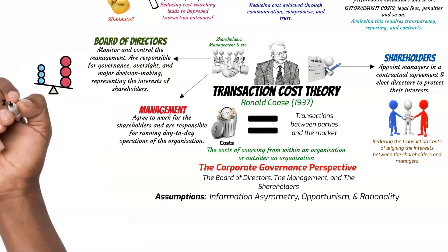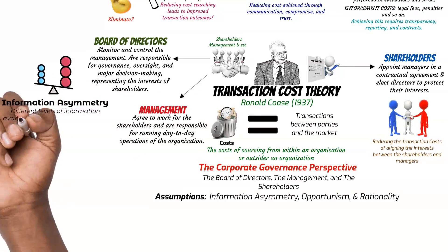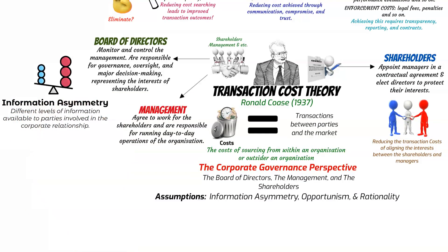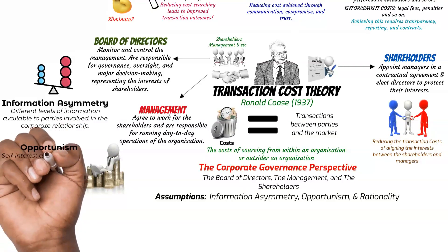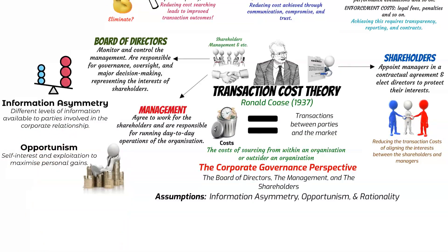By information asymmetry, the theorists argue that corporate players have different levels of information and knowledge of transactions. This can lead to one party having an advantage over the other, potentially resulting in information gaps or misalignment of interests. This brings us to the second assumption, opportunism. Due to gaps in information and knowledge, parties can act in their self-interest and exploit opportunities to maximize their gains, even at the expense of others. In corporate governance, this assumption emphasizes the need for mechanisms to mitigate opportunistic behavior, such as aligning incentives, implementing monitoring systems, and setting clear contractual terms.